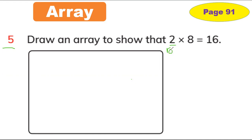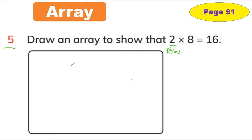Row means you have to draw something from left to right. So let's do this — I'm going to draw circles: one and two. This is two rows.